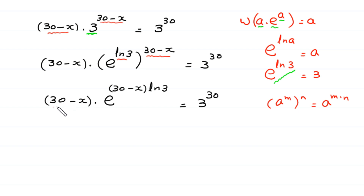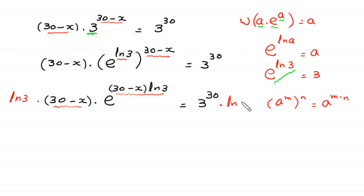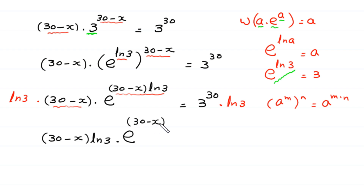Now here we have 30 minus x and here we have 30 minus x times ln of 3. So to match these expressions, we multiply both sides of this equation by ln of 3. This gives us: ln of 3 times 30 minus x times ln of 3 times e to the power 30 minus x times ln of 3 is equal to 3 to the power 30 times ln of 3.